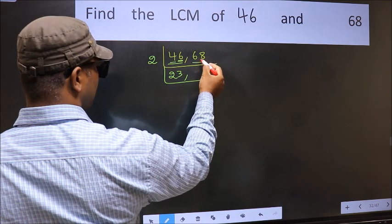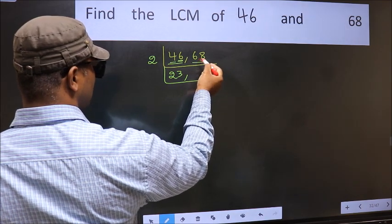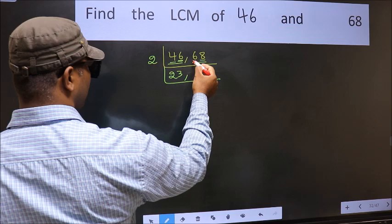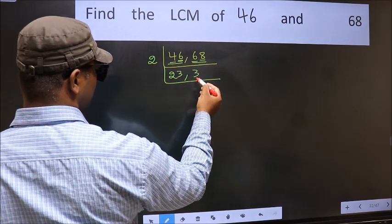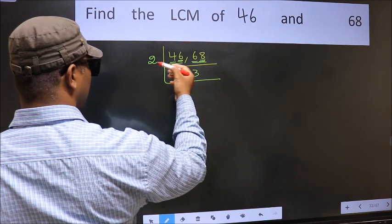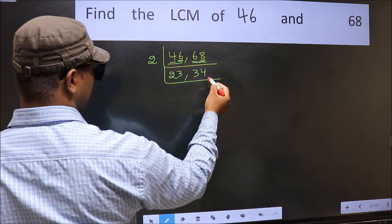Now the other number, 68. Last digit 8 is even, so this is divisible by 2. First number 6. When do we get 6 in 2 table? 2×3 is 6. The other number 8. When do we get 8 in 2 table? 2×4 is 8.